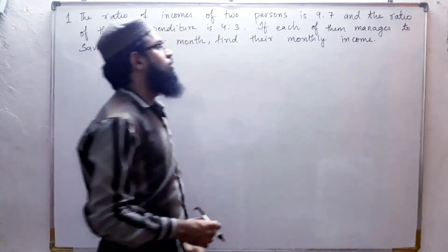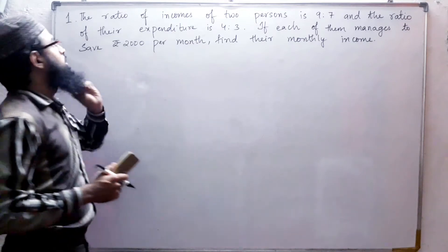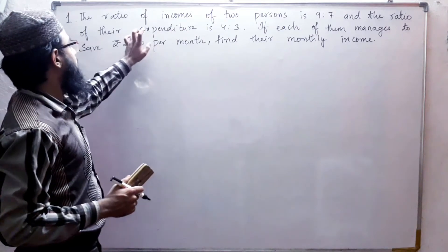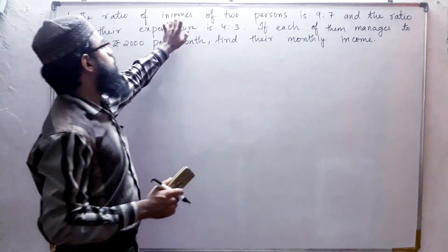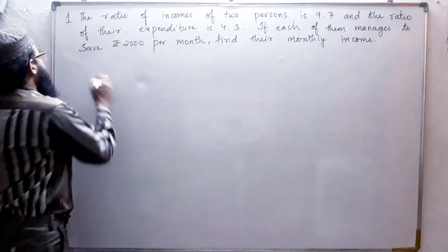So we have to find their monthly income. See here they have given the ratio of the incomes, not the incomes, and the ratio of their expenditure. So we have to find what is the income of each person. Let us start.